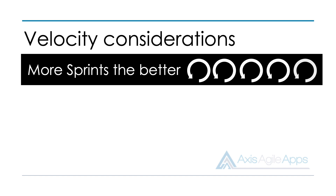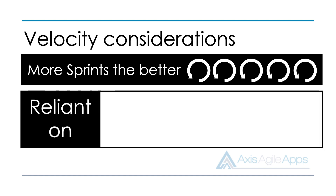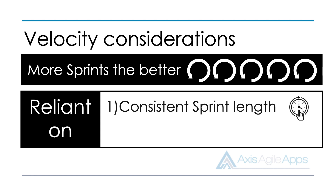Secondly, to make sure your velocity metric is reliable, you will need to keep two variables consistent. The first variable is the team sprint length. If your team is in the habit of chopping and changing their sprint length, your velocity will go up and down — it will not be reliable. In the early days of your scrum implementation, it's okay to experiment with sprint lengths. But once you decide on what works for you and your team, stick to it. A consistent sprint length is very important to making this work.